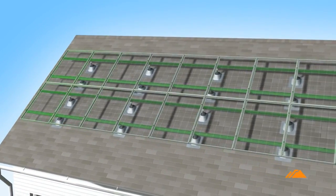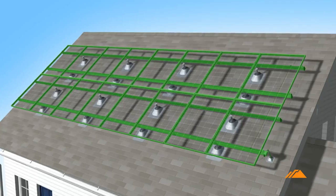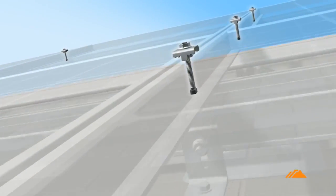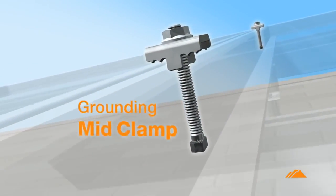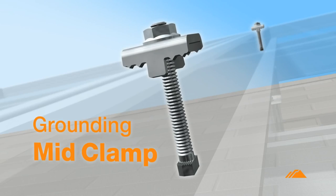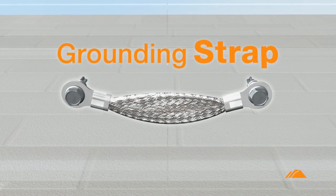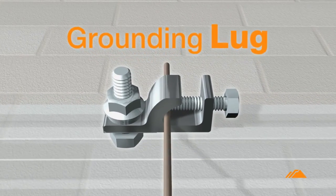This eliminates the need for separate module grounding parts and procedures. The system is made up of three primary components: the grounding mid-clamp, the grounding strap, and the grounding lug.